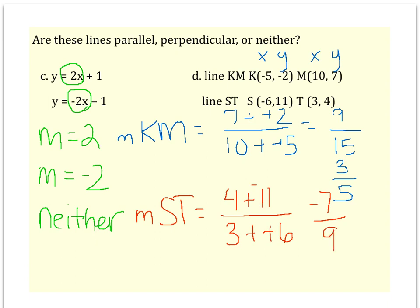You can see the slopes for KM and ST. 3/5 and negative 7/9, they clearly aren't the same. They're not opposite reciprocals. So we would say these lines are not parallel or perpendicular. They will cross at some point, but just not at a 90 degree angle.